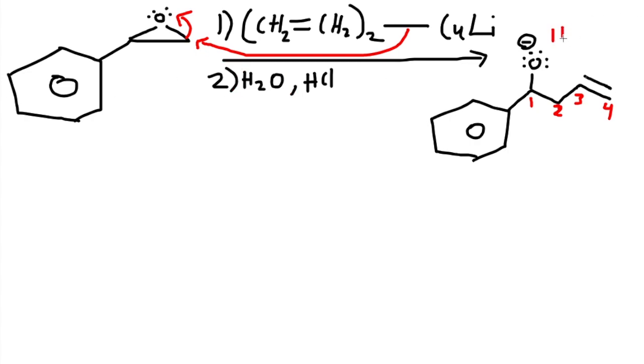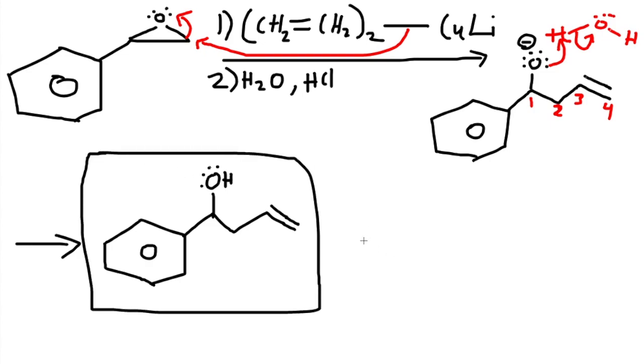Now the water comes in to deprotonate that oxygen. And so this is where we have the final product of the structure with the OH at the end. The HCl does not do anything in this case. It is just there in the process of doing the mechanism of the product of the reaction.